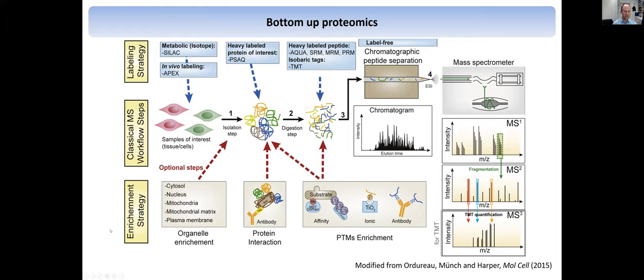On the biology side, there are also very interesting things — the enrichment strategy. Anything you can enrich from a cell you can of course look at. It can be your different organelles or compartments in the cells. But you can also enrich by pulling down a protein of interest to see what comes down with it, getting protein interaction information, or to look at post-translational modifications. These are usually quite substoichiometric, so you need to pull down those modifications — for example, phosphorylation with titanium oxide — to look at which peptides were phosphorylated and how that changes.